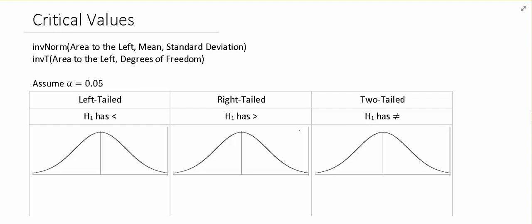So for tests about proportions, we're always on the normal distribution. For tests about means where we know the population standard deviation, we're also on the normal distribution. But if we've got a test about a mean where we don't know the population standard deviation, we only know the sample standard deviation, that's when we use the t.